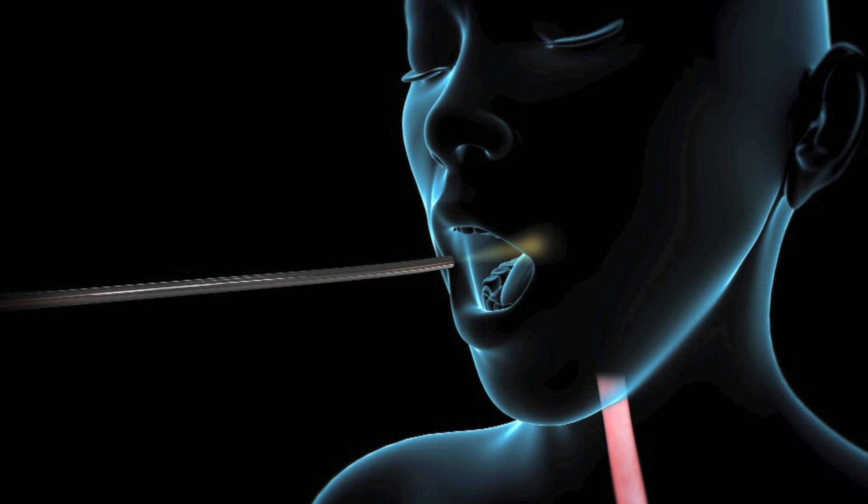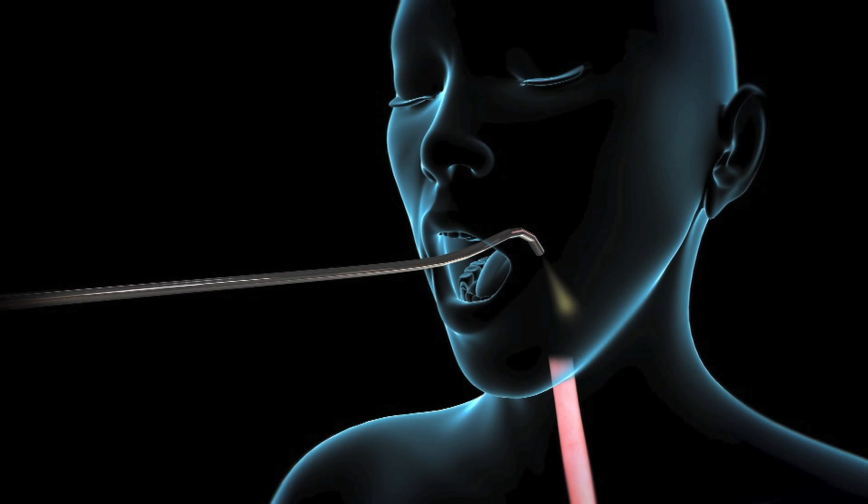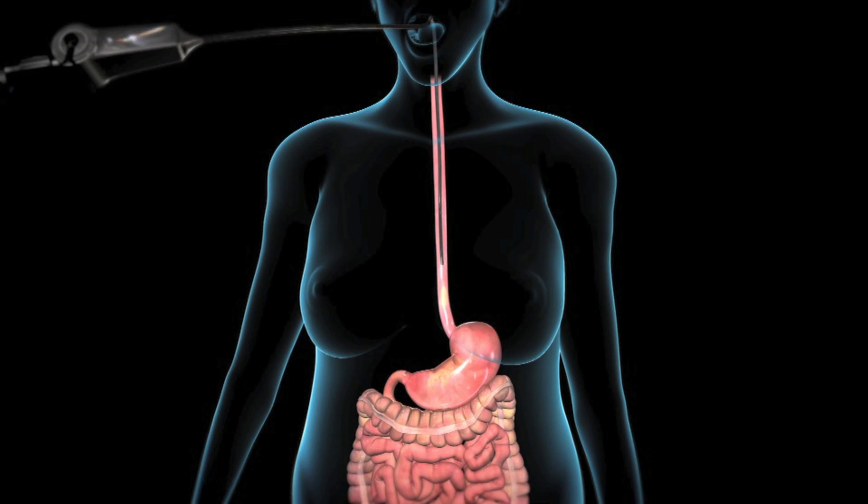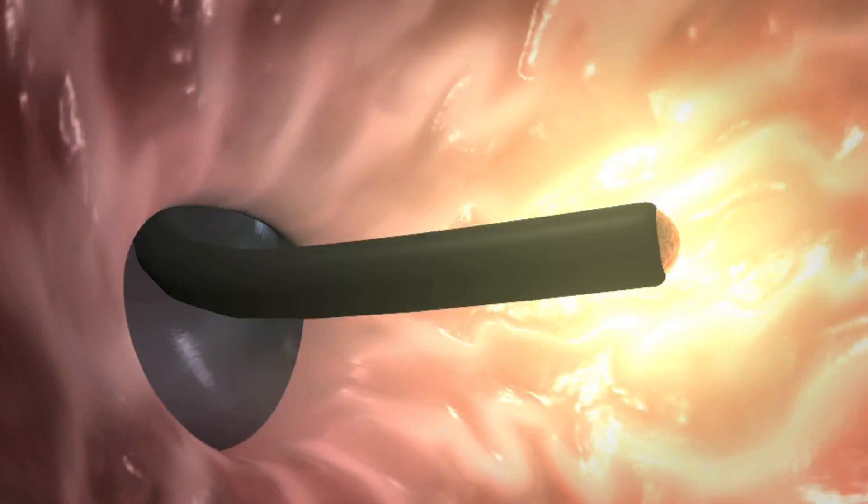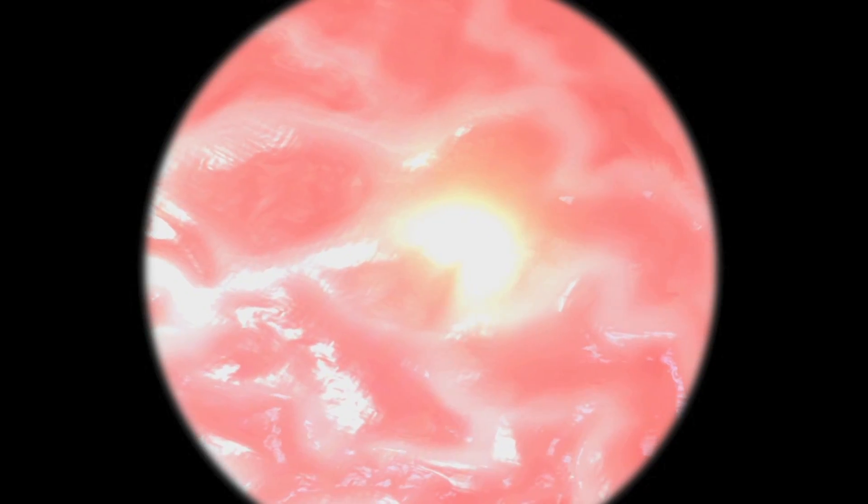During this procedure, your doctor will insert an endoscope through your mouth and thread it down your esophagus and into your stomach. A camera attached to the endoscope will produce images of the inside of your stomach, which will be displayed on a video monitor.